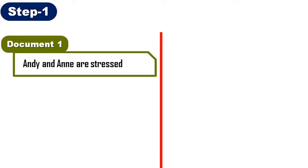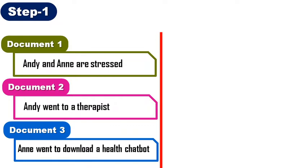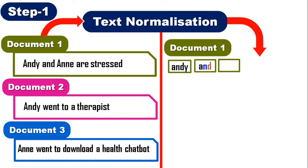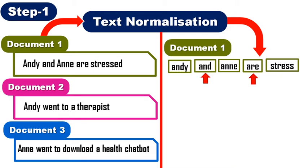Step 1 of text normalization: here three documents are present. Document 1 has one sentence: 'Andy is stressed.' Document 2 has one sentence: 'He went to a therapist.' Document 3 has one sentence: 'He went to download a health chatbot.' We create the corpus from these, and after text normalization all the tokens will be segmented. You can see that stop words are still present in this example.